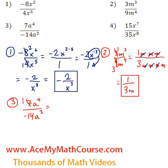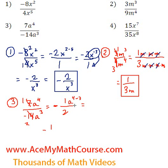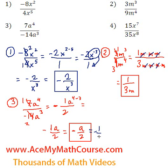So 7 over negative 14 is just negative one half. And a to the power of 4 over a cubed — I can just change that into a to the power of 4 minus 3. So 4 minus 3 is just 1, giving us just a. So we get negative 1 half times a, which is negative a over 2. That's equivalent to negative half a — same thing. I'm going to make a note of that: that's equal to negative one half a.